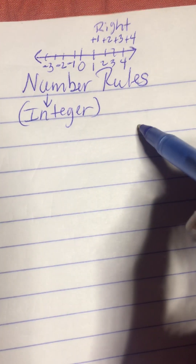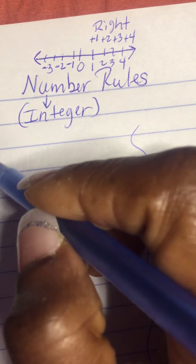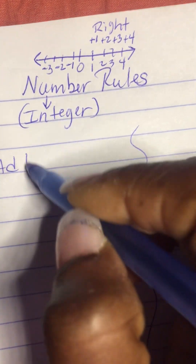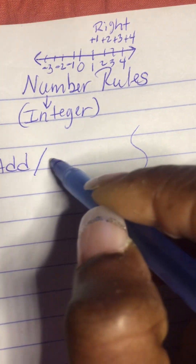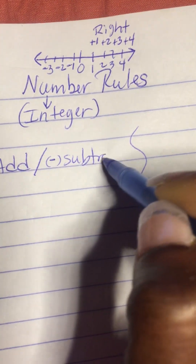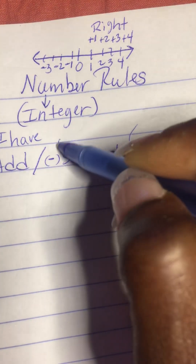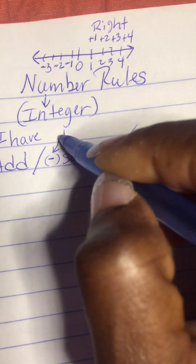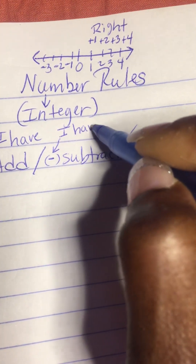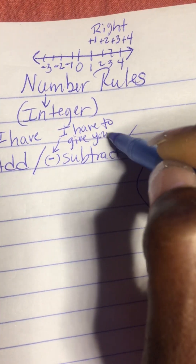There are different rules when you add and subtract versus multiply and divide integers. When you add, or if something is positive, it means 'I have.' If you subtract, it means 'I have to give you.'